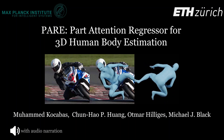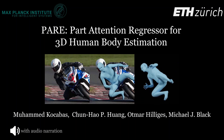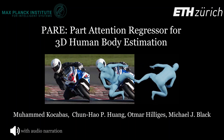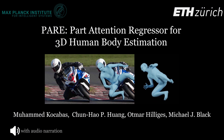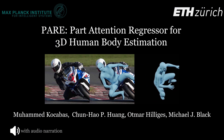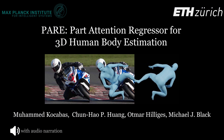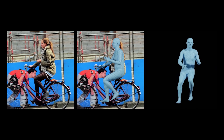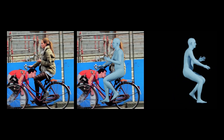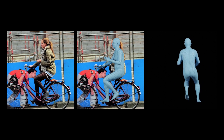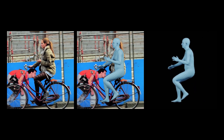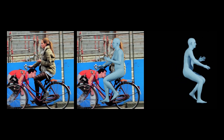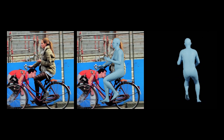We introduce PEAR, the Part Attention Regressor, a method that estimates 3D human body pose and shape from a single image. Our core contribution is a novel part attention mechanism that makes PEAR robust to occlusion of various kinds.